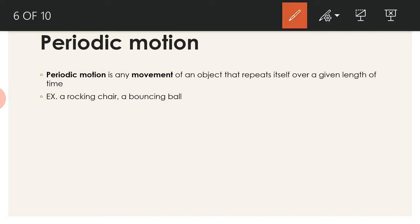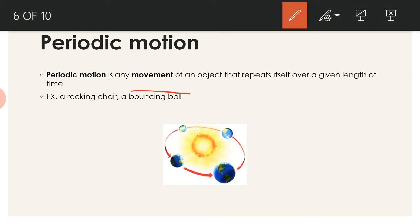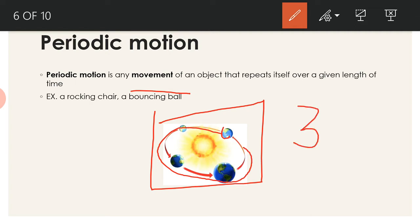Periodic motion is the motion in which the movement of an object is repeated after a fixed interval of time. For example, a rocking chair or a bouncing ball. In the picture we can see the earth, when started from a point, takes a perfect time of 365 and 1/4 days to complete one revolution around the sun.